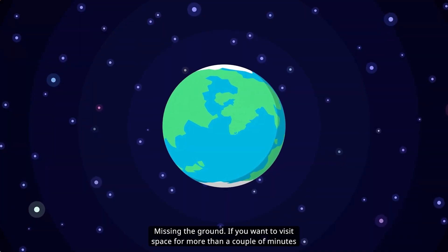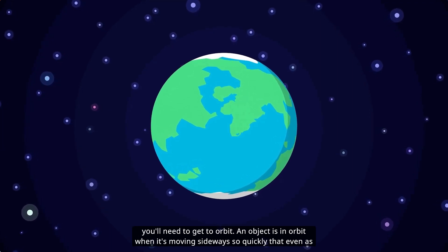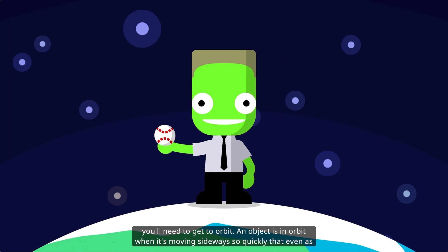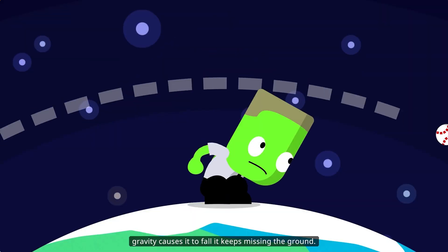Missing the ground. If you want to visit space for more than a couple of minutes, you'll need to get to orbit. An object is in orbit when it's moving sideways so quickly that even as gravity causes it to fall, it keeps missing the ground.